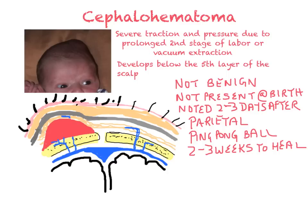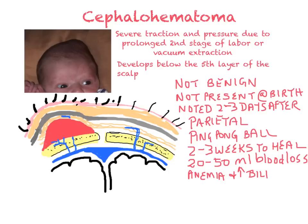There can easily be 20 to 50 ml of blood loss, which accounts for nearly 10 to 20% of total blood volume — which is extremely significant. Complications include anemia and hyperbilirubinemia, underlying skull fracture, and bacterial seeding of the hematoma that can lead to osteomyelitis as well as meningitis, as the diploic veins serve as a conduit for infection passing into the brain and into the bone.